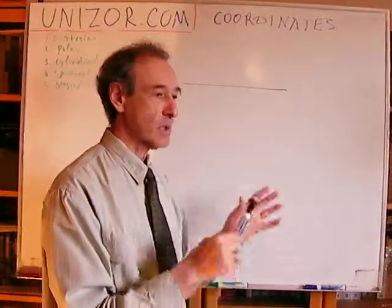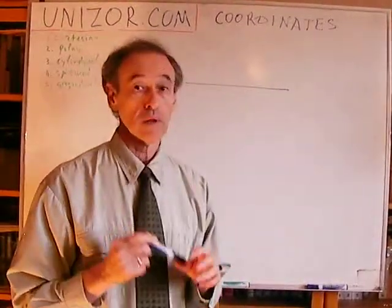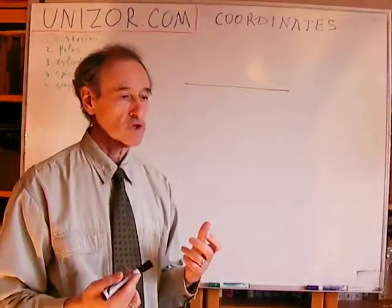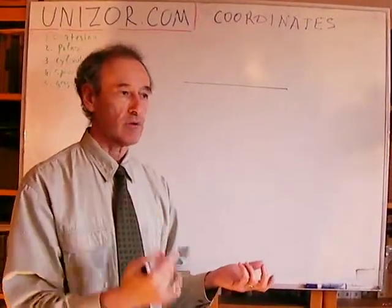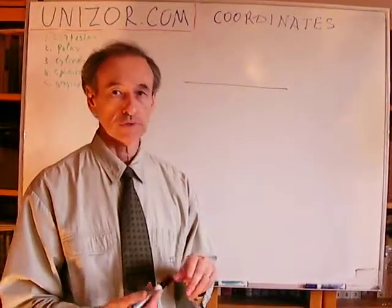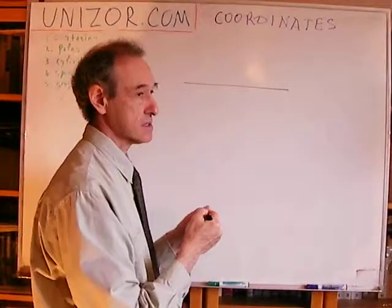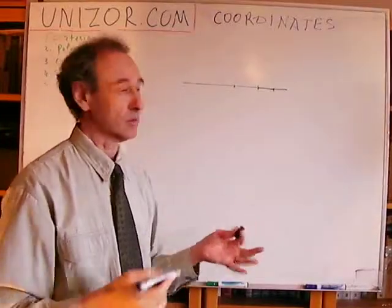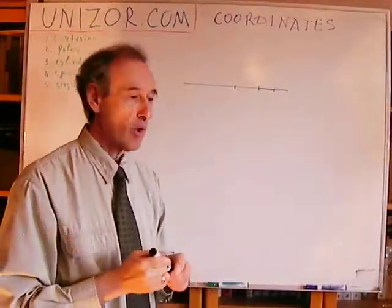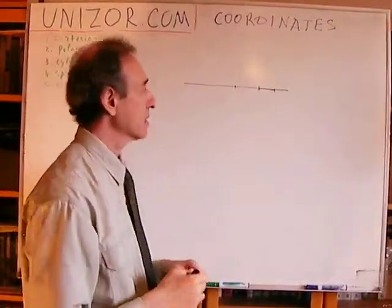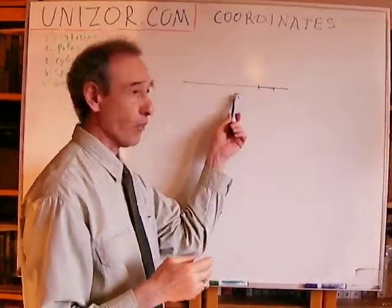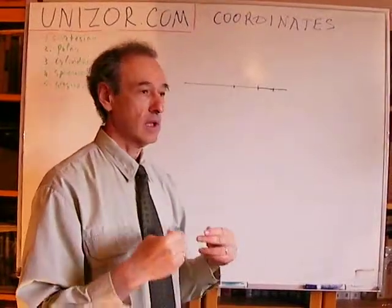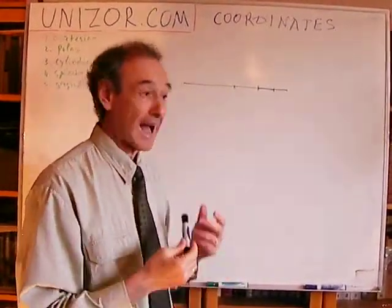Let me start with a coordinate system on the line. What is actually a coordinate system? A coordinate system is the way to numerically characterize a geometric object. A geometric object on the line is something like a point, or a segment, or many segments. So how can we numerically characterize these things? The first thing we should start with is to numerically characterize a point.